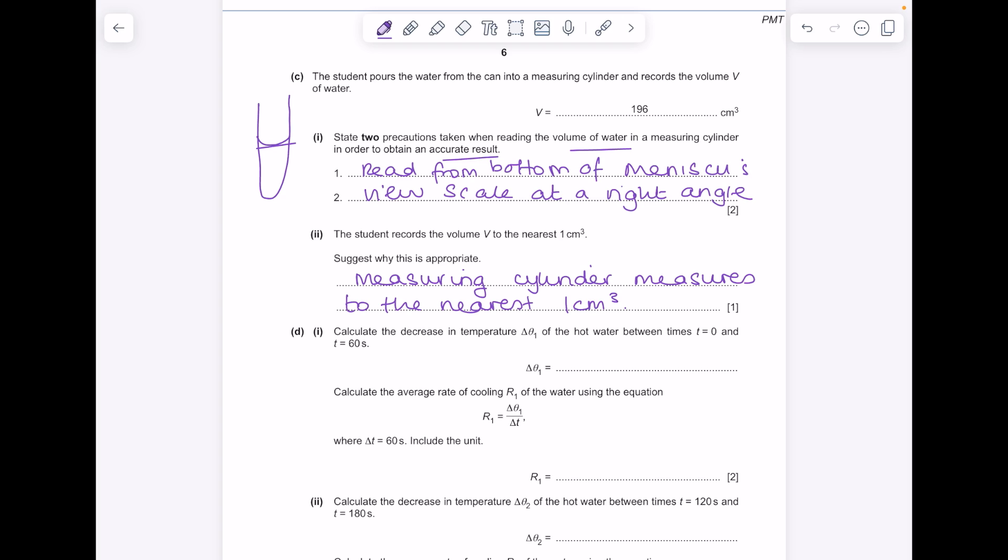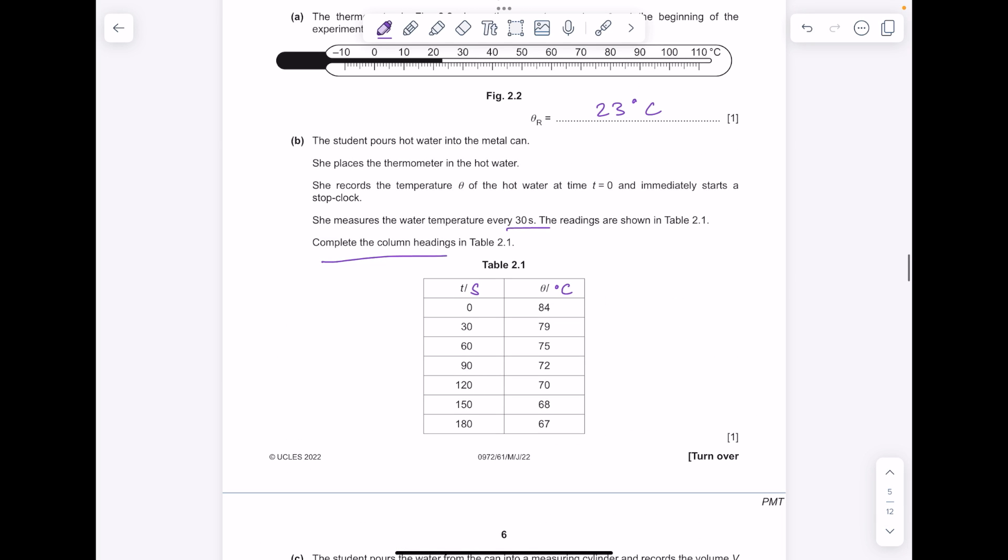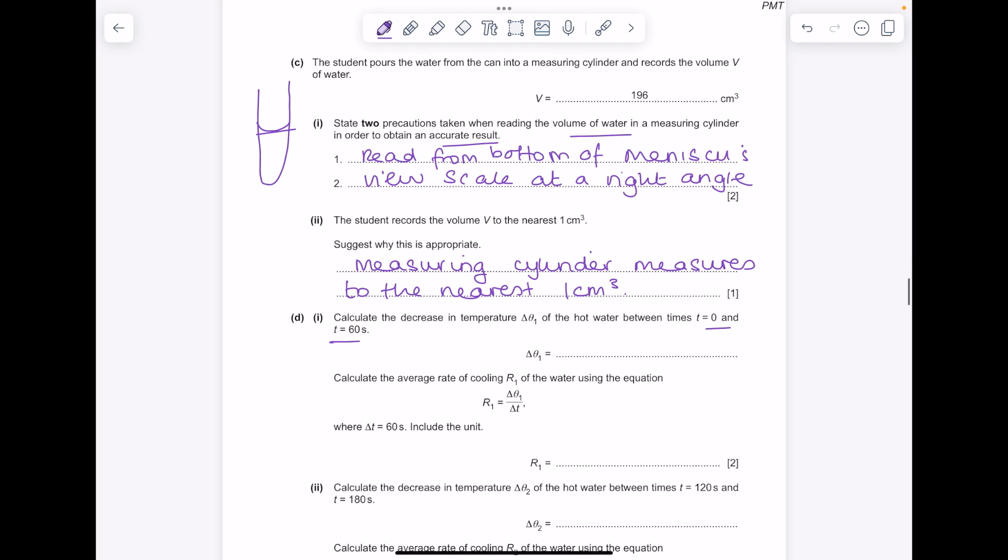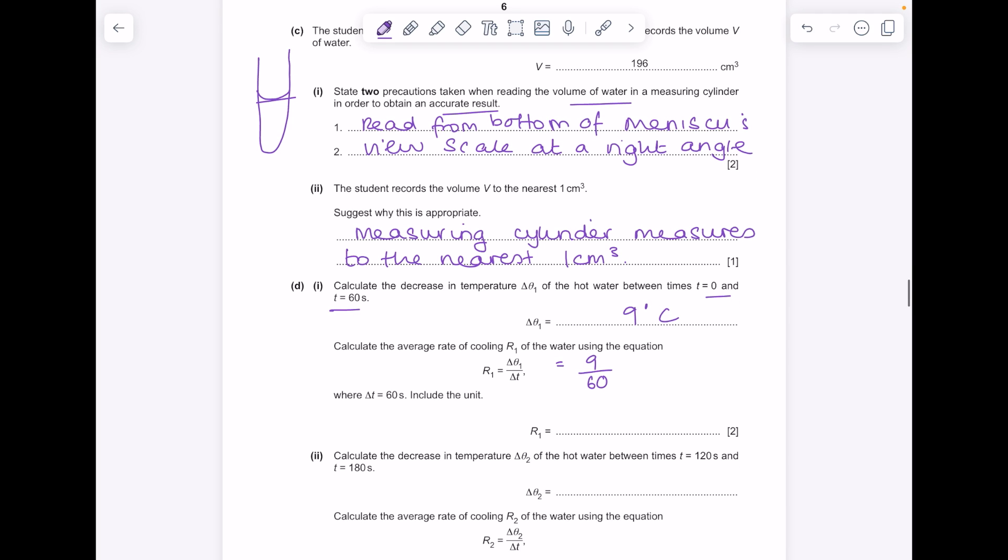Calculate the decrease in temperature delta theta 1 of the hot water between times T equals 0 and T equals 60 seconds. So there's 0, there's 60 seconds. So what is the difference in these temperatures? Well it's 9 degrees. Calculate the average rate of cooling using the equation. So what was our time frame? It was 60 seconds. We want to include a unit, so just sub in those units, it will make it so much easier for you. So the answer here is 0.15 degrees Celsius per second.